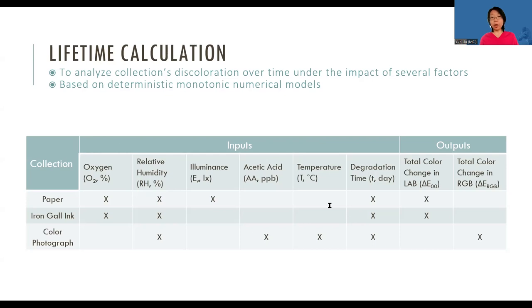For paper, the significant factors are oxygen concentration, relative humidity, and illumination. For angle ink, the factors are oxygen concentration and relative humidity.